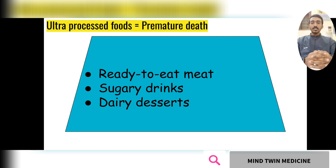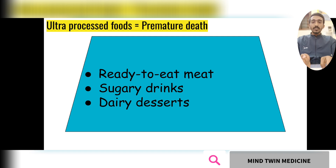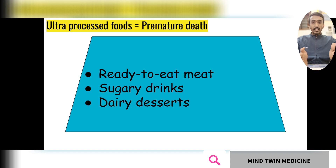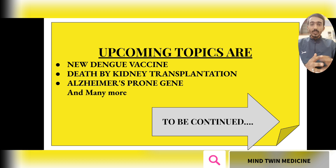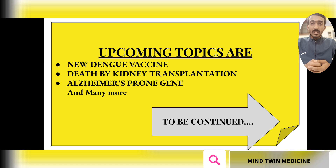Continuing with ultra-processed foods, which are leading to premature death. Recently, some children who were drinking energy drinks were diagnosed with liver diseases, and many other diseases linked to ultra-processed foods are increasing. Ready-to-eat meat, packaged food, sugary drinks, and dairy desserts are all very dangerous to health. Tomorrow's videos will cover topics like Alzheimer's-prone genes, a death due to kidney transplantation, the new dengue vaccine, and many more conditions. Thank you.